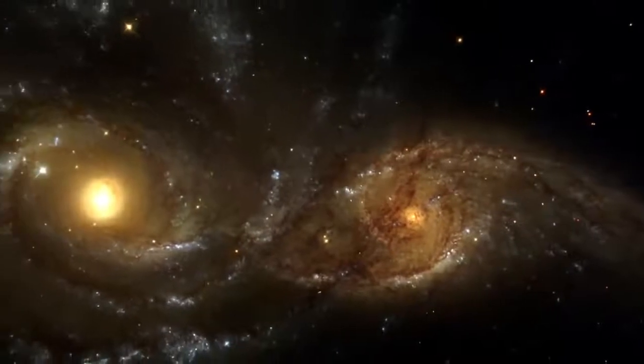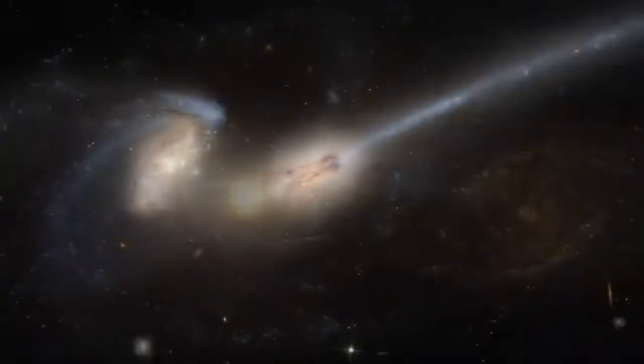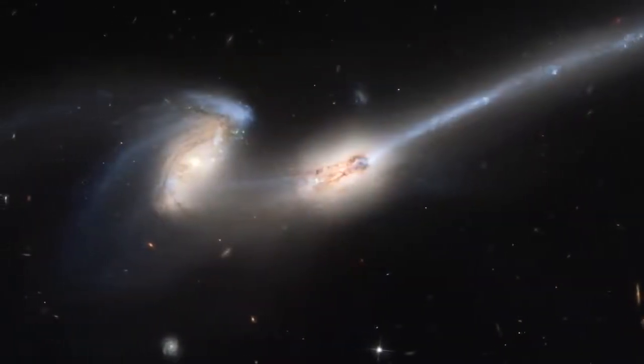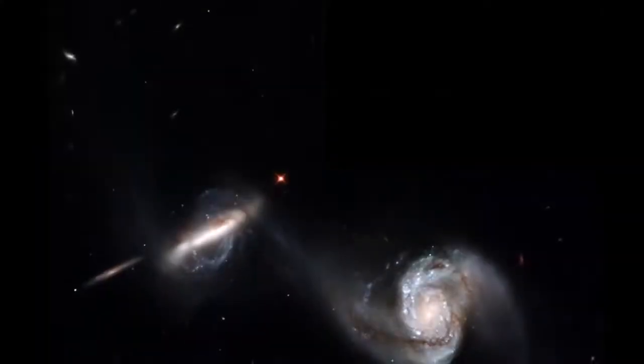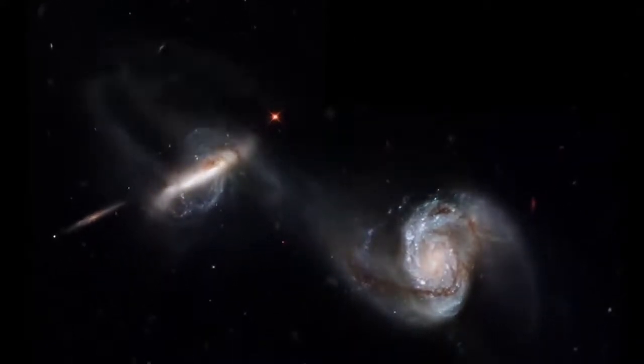Full-grown galaxies approach and interact with each other. They may collide and eventually merge. As the galaxies approach, the tug of gravity creates tides that distort their shapes.